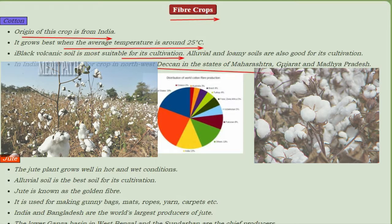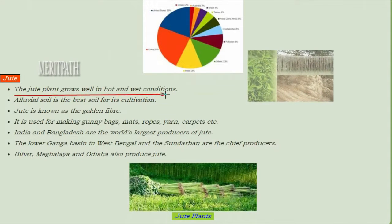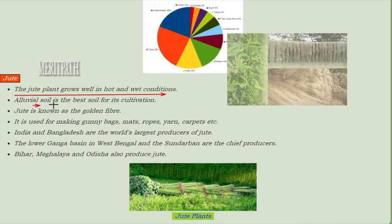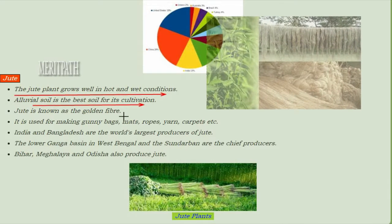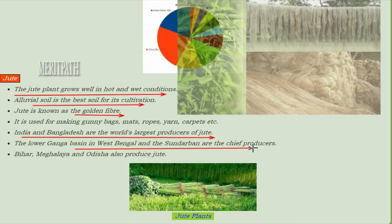The states of Maharashtra, Gujarat, and Madhya Pradesh are major cotton producers. Coming to the next fiber crop — jute. The jute plant grows well in hot and wet conditions. Alluvial soil is best for this cultivation. Jute is known as the golden fiber. India and Bangladesh are the world's largest producers of jute. The lower Ganga Basin, West Bengal, and Sundarbans are the chief producers of jute in India. Bihar, Meghalaya, and Orissa also produce jute.